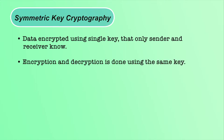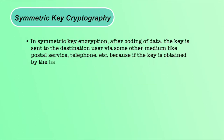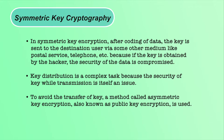Symmetric key algorithm systems include AES (Advanced Encryption Standard), DES (Data Encryption Standard), 3DES (Triple Data Encryption Standard), and IDEA (International Data Encryption Algorithm). In symmetric key encryption, after coding the data, the key is sent to the destination via some other medium like postal service or telephone. Because if the key is obtained by a hacker, the security of the data is compromised. Key distribution is a complex task — to avoid the transfer of key, a method called asymmetric key encryption, also known as public key encryption, is used.